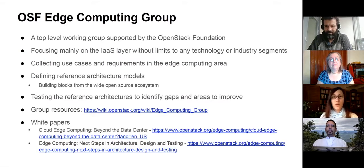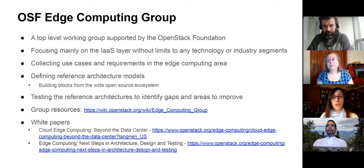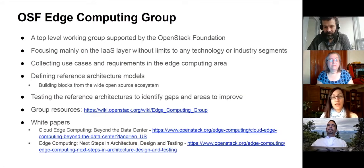Our vision and mission is to understand the edge computing space better and help all industries and groups in the open source space to fill gaps and provide solutions for edge computing use cases. We started a few years ago by collecting use cases and analyzing them for requirements to understand what they really need in order to be successful. Once we had a better understanding, we started to work on reference architecture models and strategies to test and evaluate these architectures. You can check out more details about the working group at the wiki page listed on the slide.